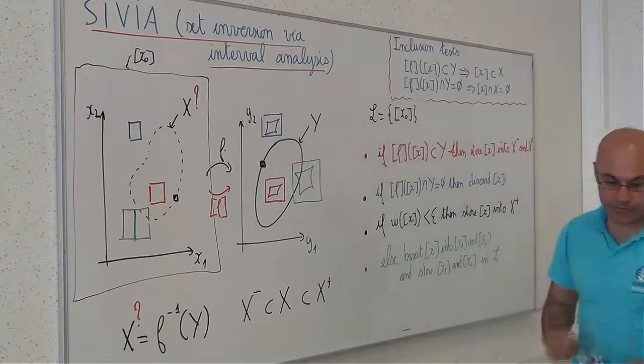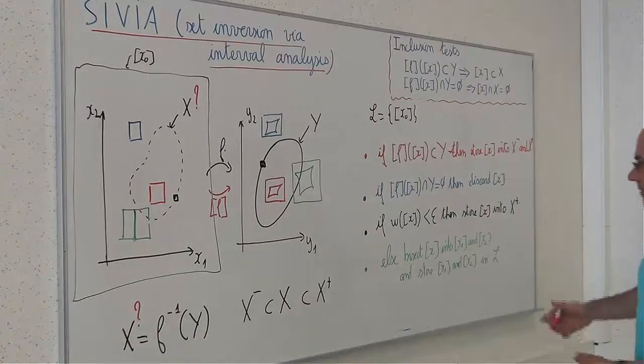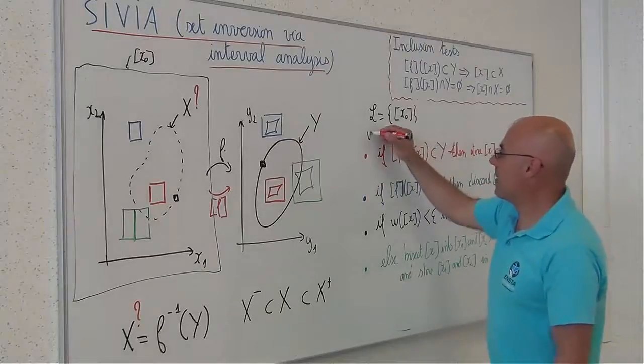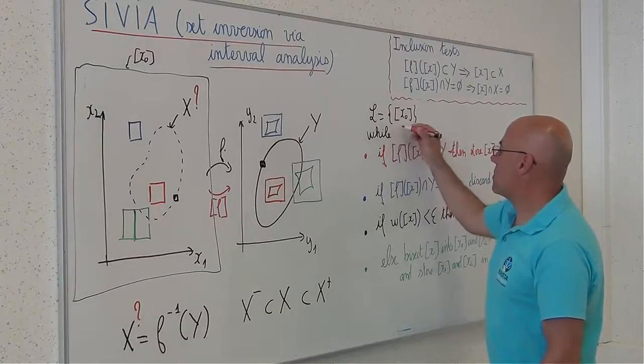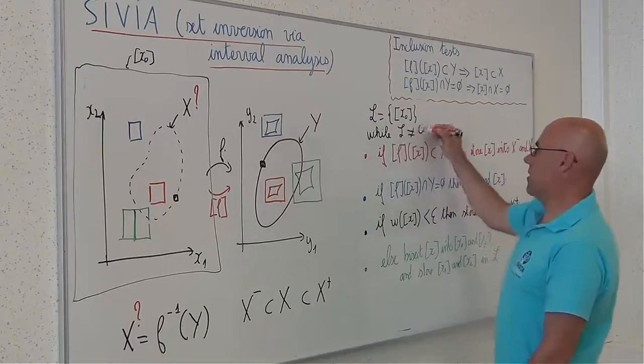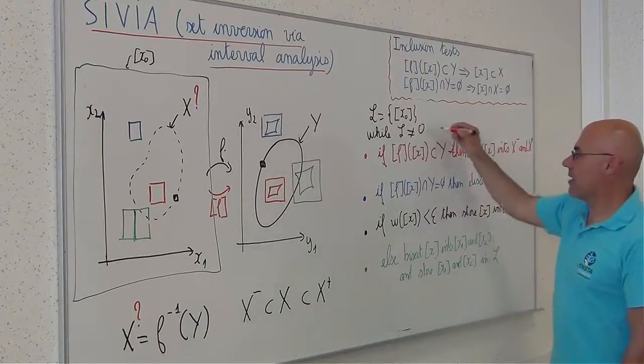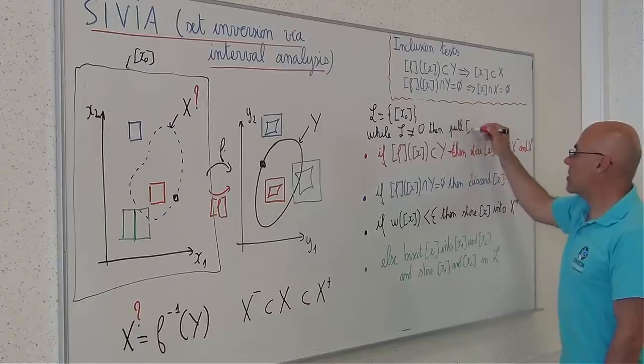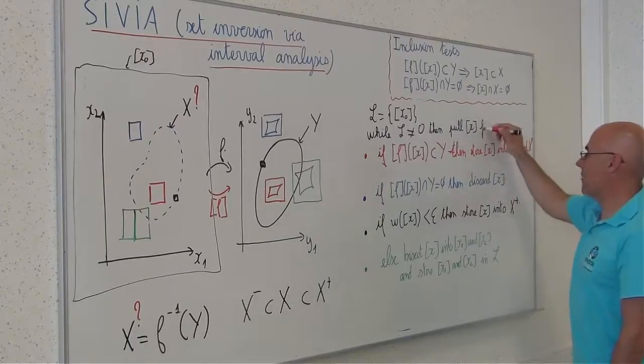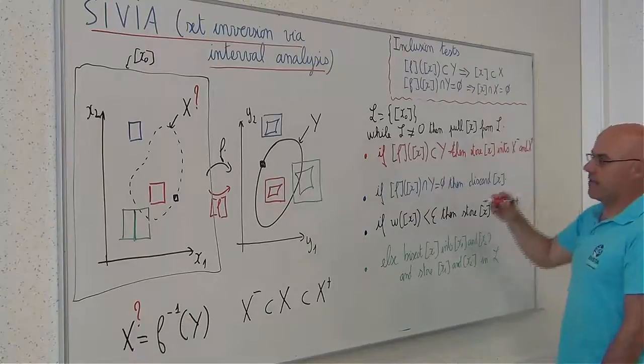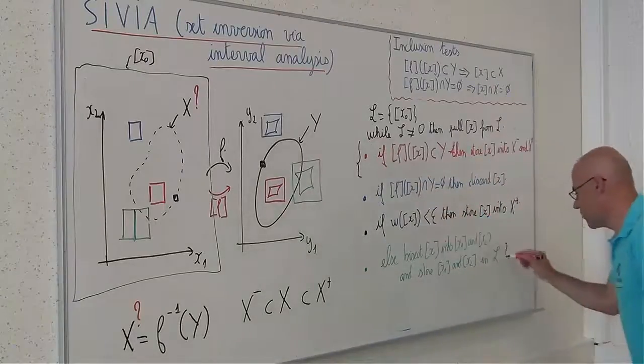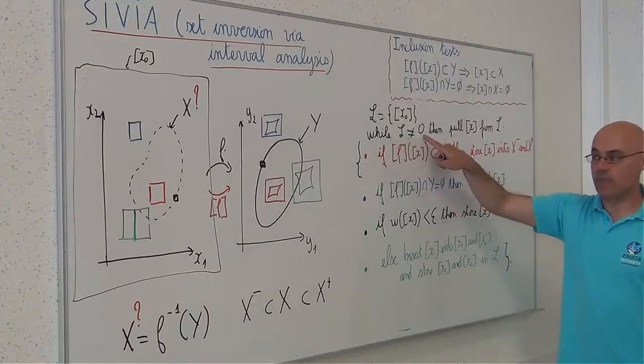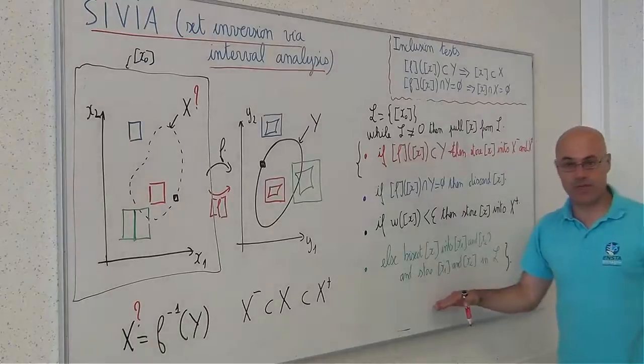So, now I will have to do this while the list is not empty. Then I will pull this box. So, now I will remove a box, the current box, from L, and I will have to perform all this operation. Of course, when the list becomes empty, my algorithm will terminate.